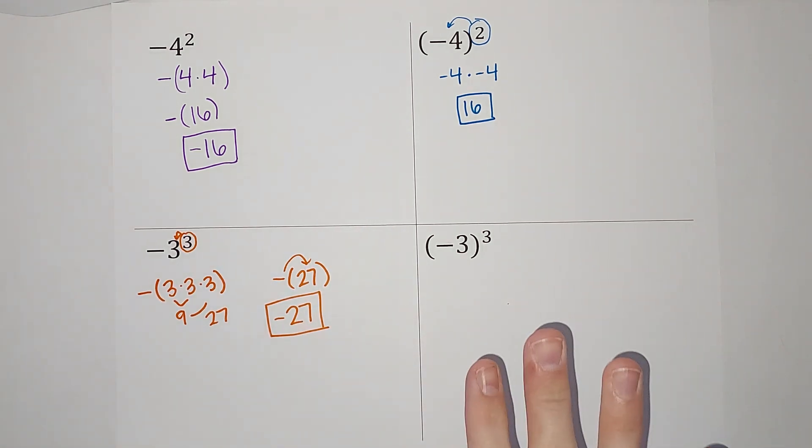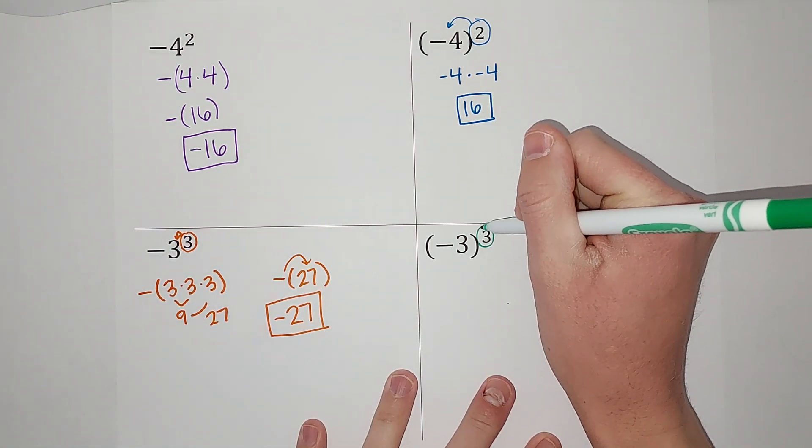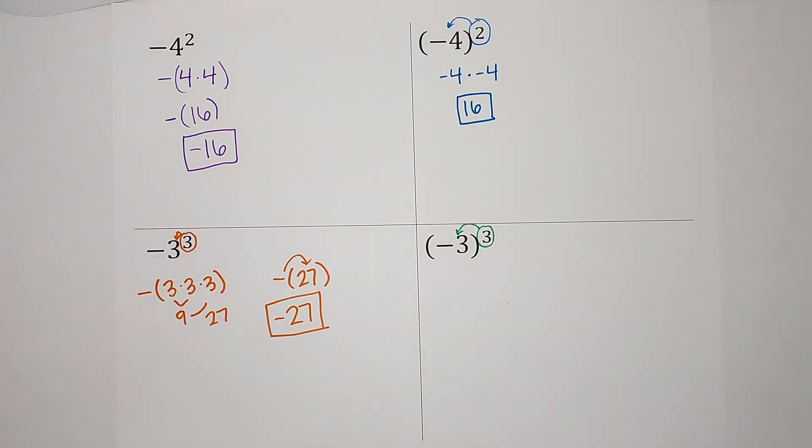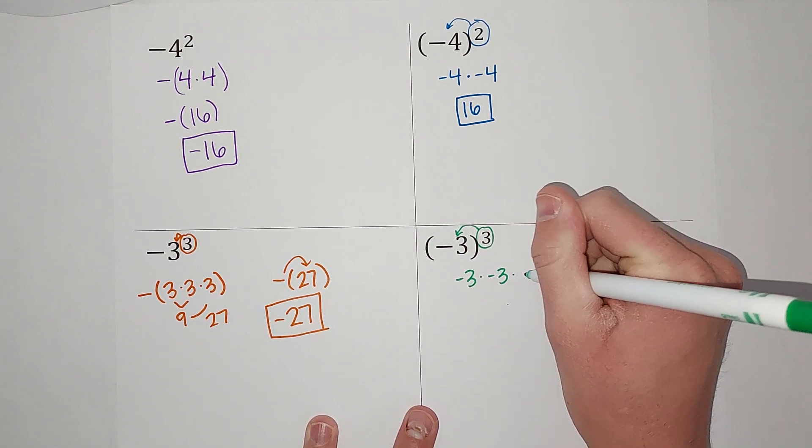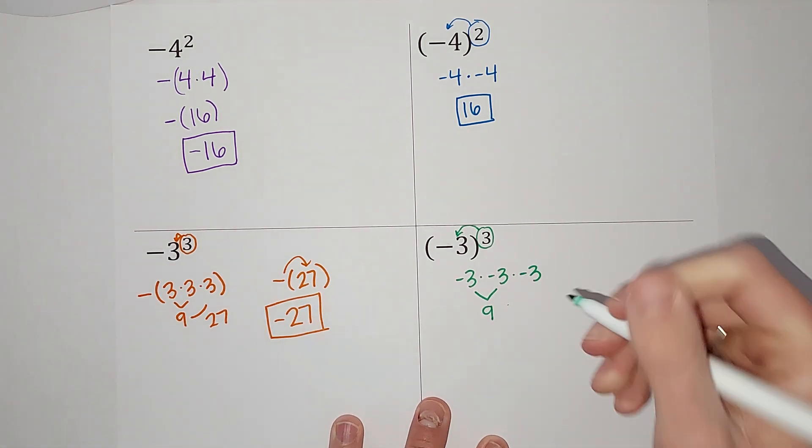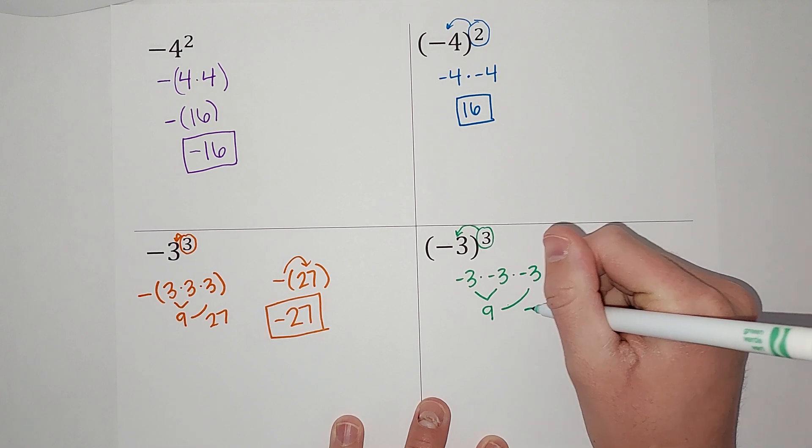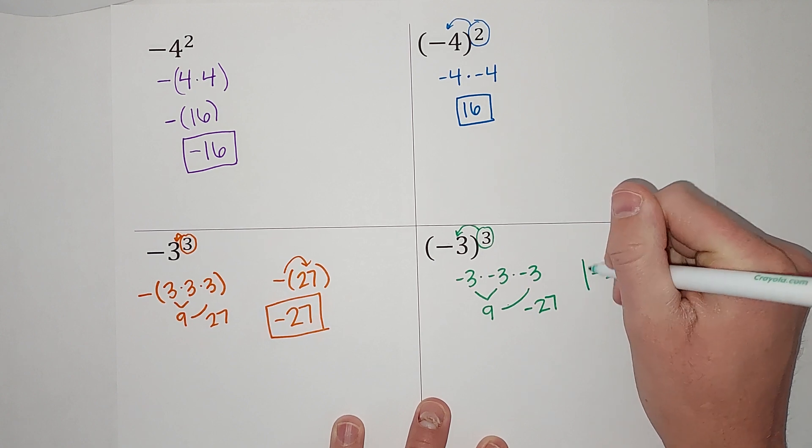Now, let's see what happens here when the parentheses are around the negative. Here, now the parentheses are around the negative, my cubed applies to the whole thing, to the negative and the three. So this is negative three times negative three times negative three. Negative three times negative three gives me a positive nine. Nine times a negative three gives me a negative 27. So look at that. This one is also negative 27.